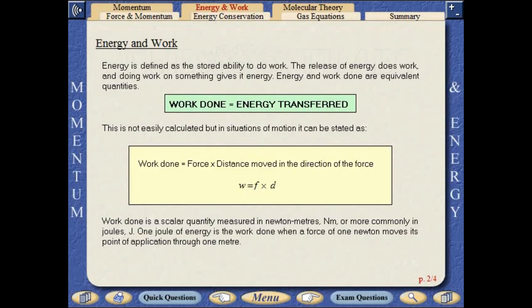This is not easily calculated, but in situations of motion, it can be stated as work done equals force times distance moved in the direction of the force. Work done is a scalar quantity measured in newton meters, or more commonly in joules. One joule of energy is the work done when a force of one newton moves its point of application over a distance of one meter.